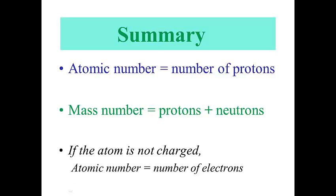So, a quick summary. Atomic number is protons. Mass number is protons plus neutrons. And if the atom is not charged, the atomic number is also equal to the number of electrons.